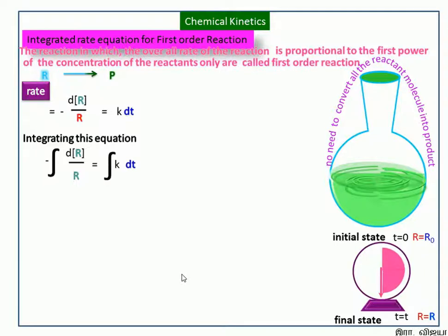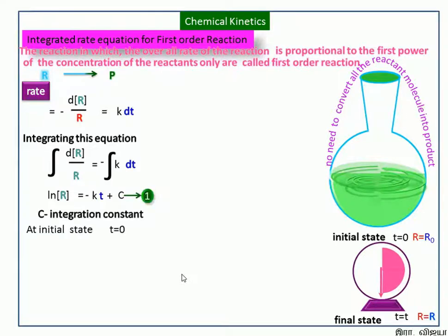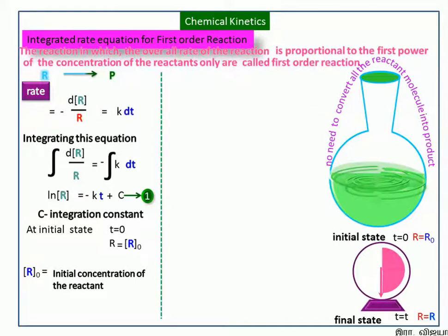After integration, we get: ln[R] = −kt + C, where C is the integration constant. At the initial time, t = 0 and R = R₀, where R₀ is the initial concentration of the reactant. Substituting these values: ln[R₀] = −k(0) + C, so the k term becomes zero and we get C = ln[R₀]. Now we substitute this value of C back into the equation.